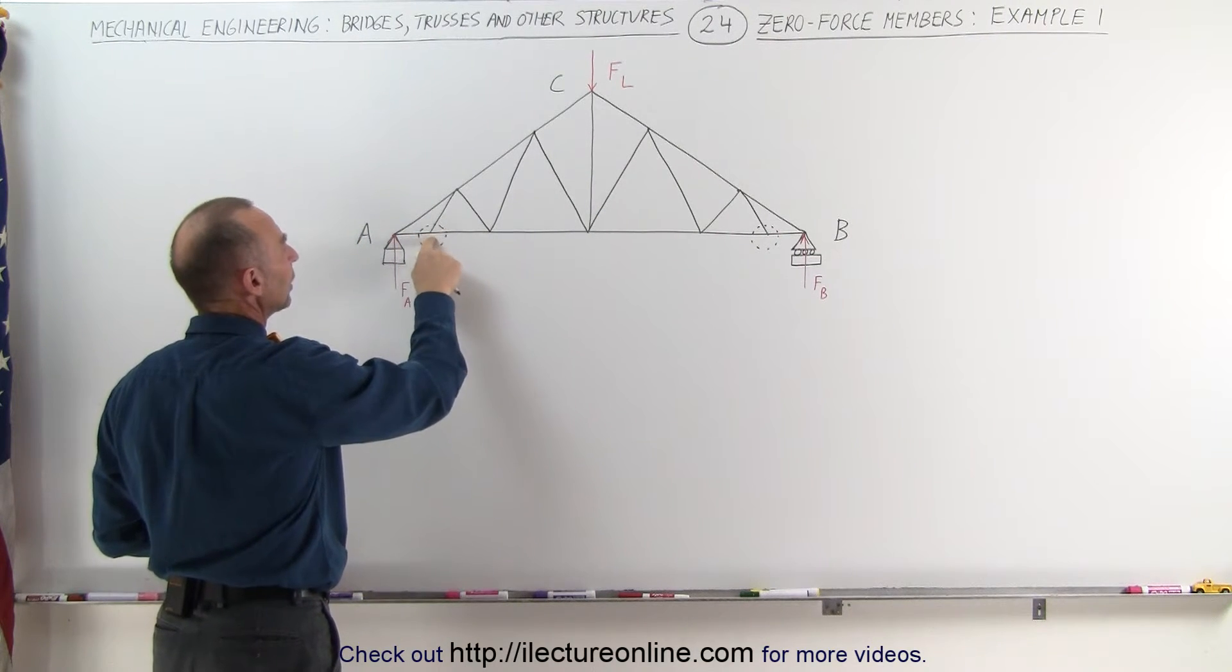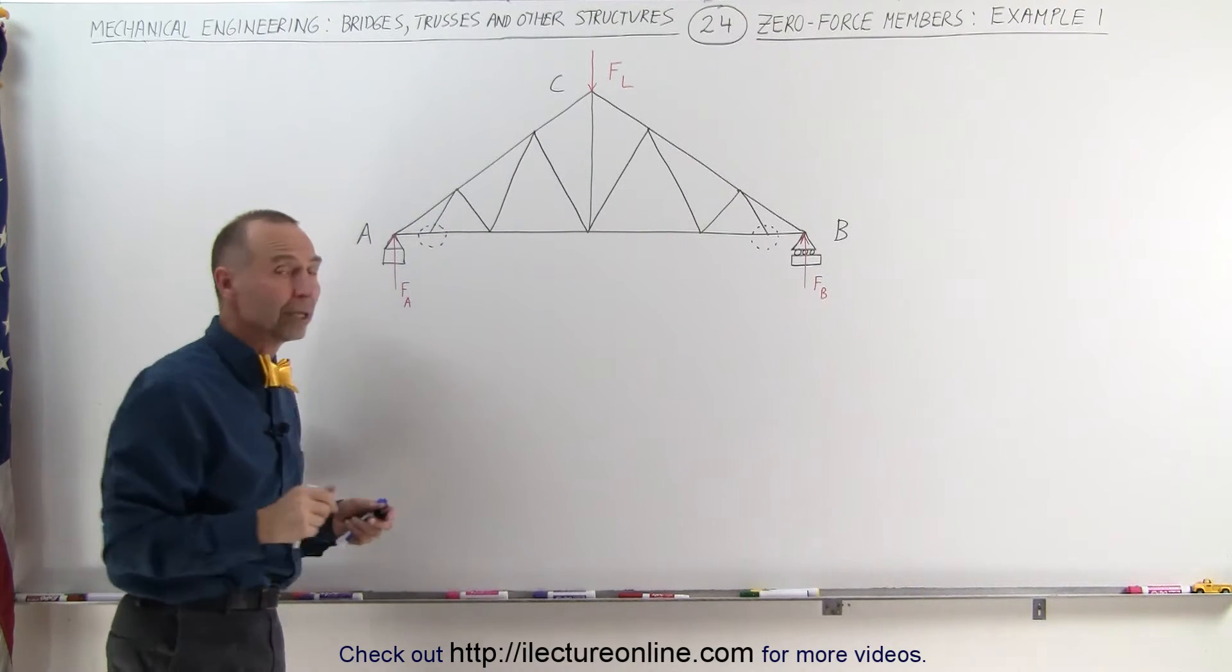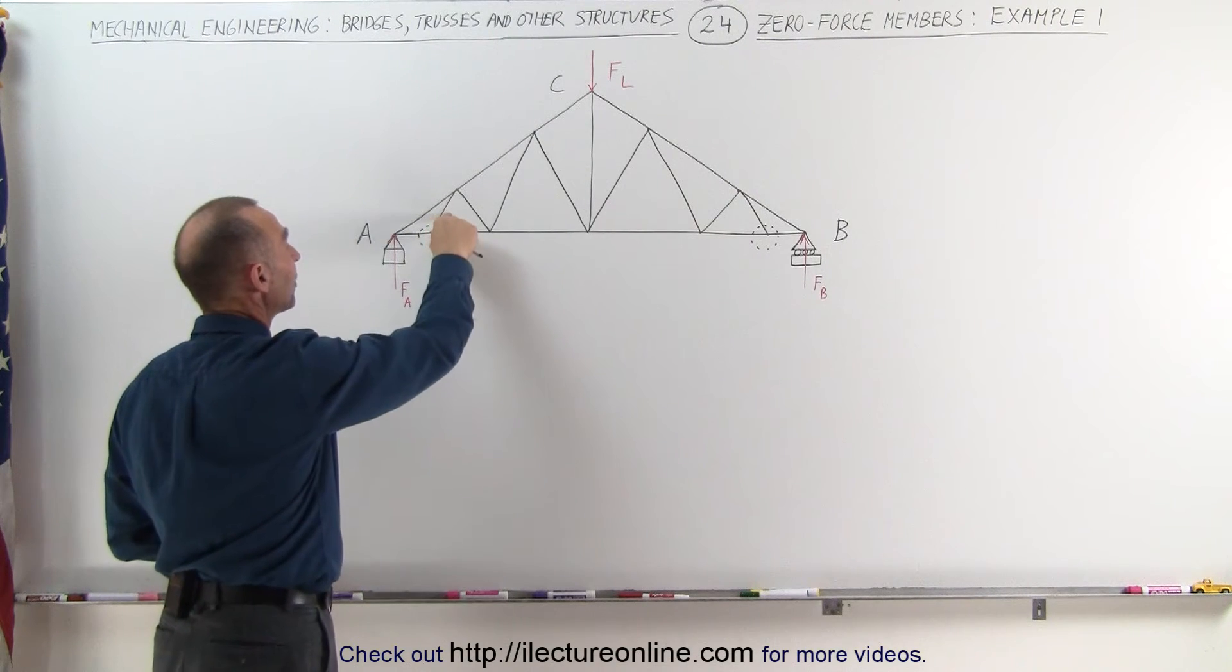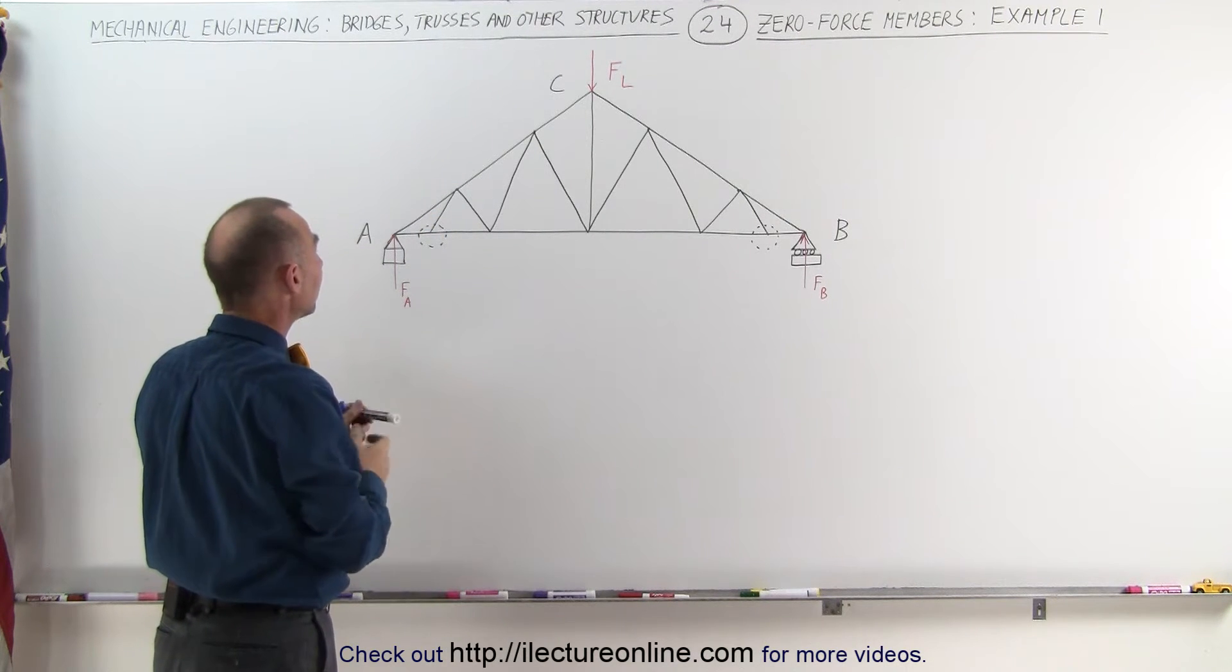The first two members are collinear, the third one is not collinear. Therefore, you would say that this member cannot have a force on it, that must therefore be a zero force member.